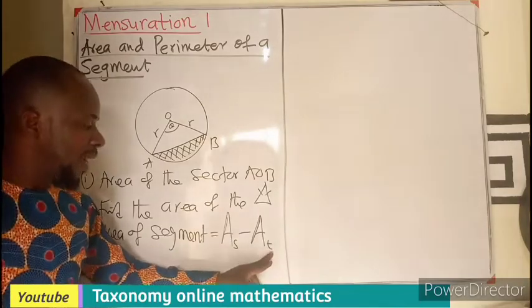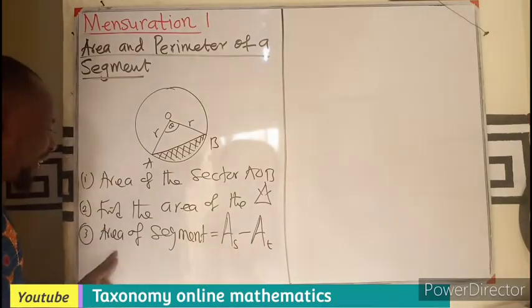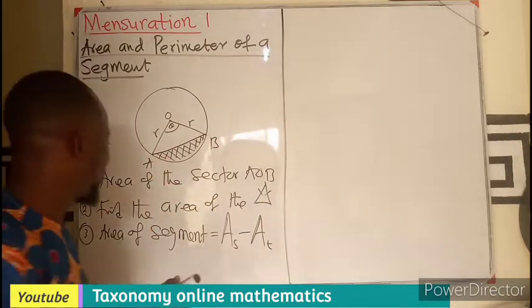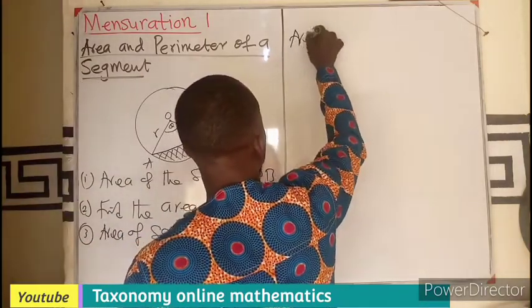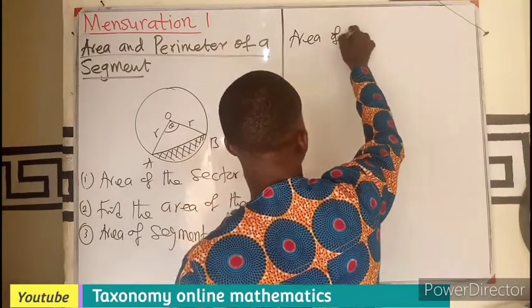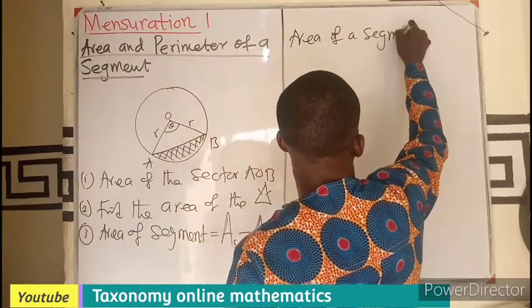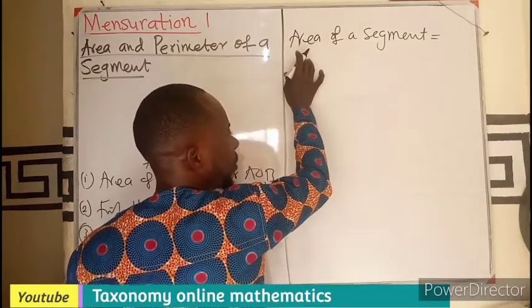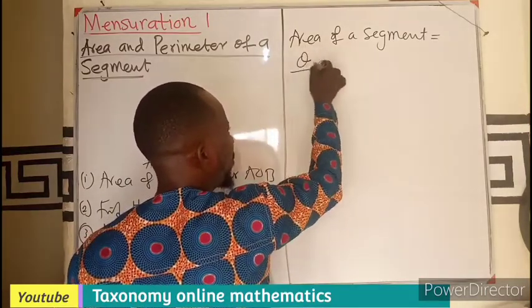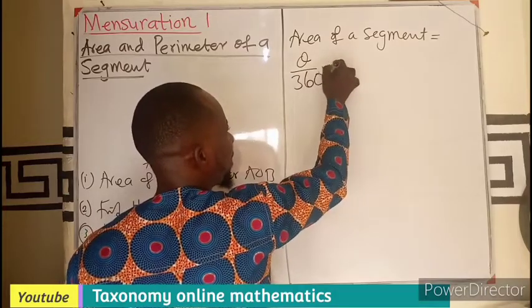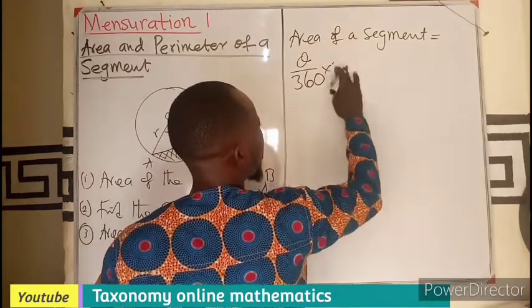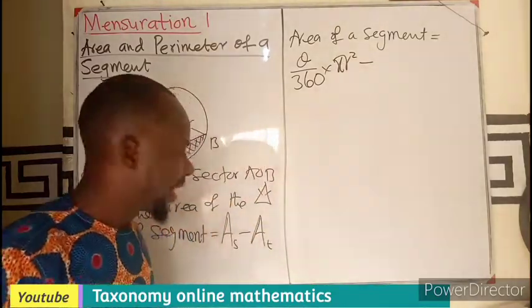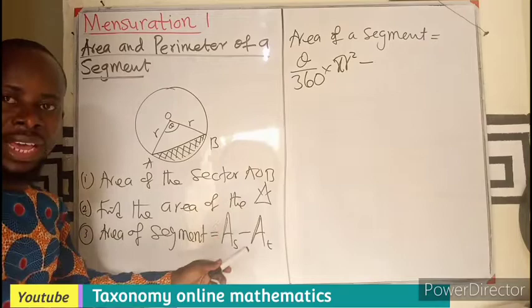So, if I subtract the area of a triangle from that of a sector, I should be getting the area of the segment. So, in a broader sense, area is going to be, first of all, area of a sector, which is theta over 360 times pi r squared minus the area of the triangle. And I said earlier, like this, is an isosceles triangle.